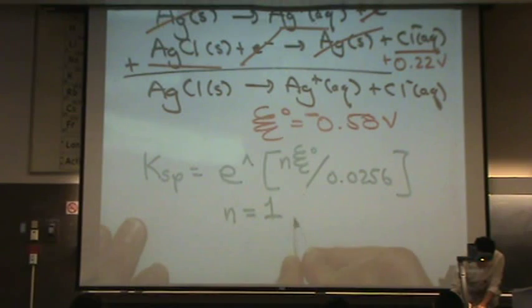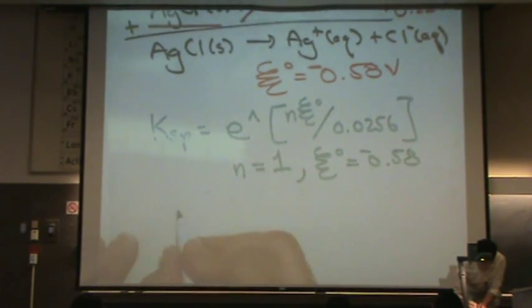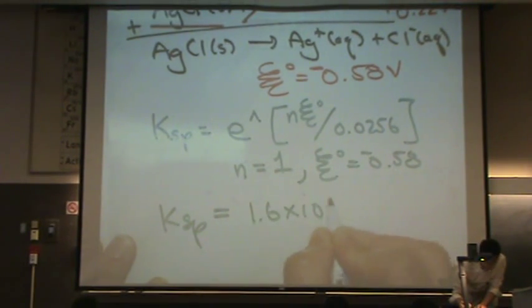And then we've already got E standard. That's a negative 0.58. If you calculate this out, KSP will equal 1.6 times 10 to the minus 10.